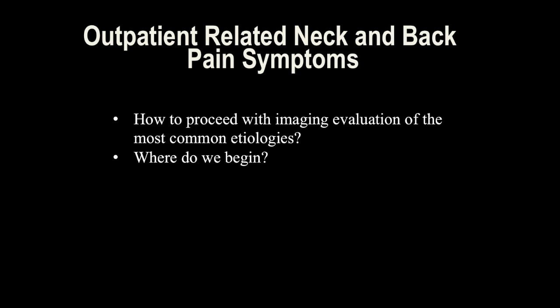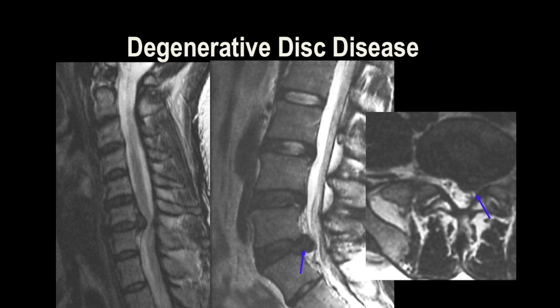For outpatient neck and back pain, MRI is the gold standard for degenerative disc disease — we can see indirect signs in other modalities but MRI is the only modality to really assess the disc. Here we have a good example in the lower lumbar spine of disc herniation; on the left is a higher cervical spine disc herniation that causes some narrowing of the spinal canal. Here is an axial view showing a focal disc herniation possibly compressing the nerve root.